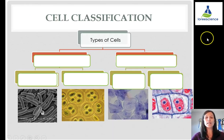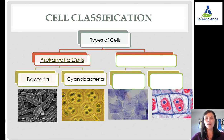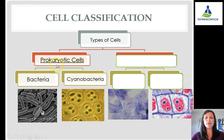Cytoplasm allows for movement of molecules within the cell to sustain life. When looking at types of cells, we can break it down into two major classifications. The first is called prokaryotic cells. Prokaryotes consist of only bacteria and cyanobacteria. They are single-celled and very simple, and a prokaryotic cell can only ever be one cell large.